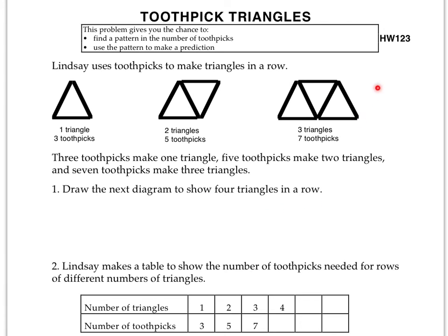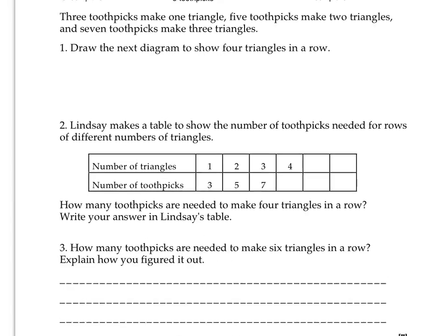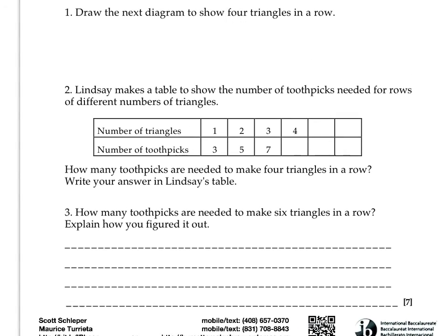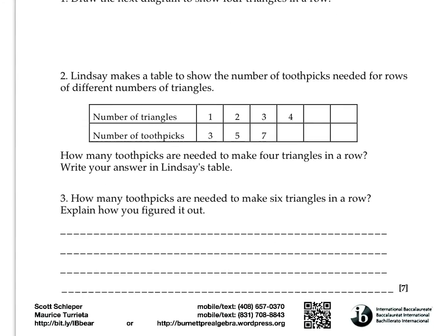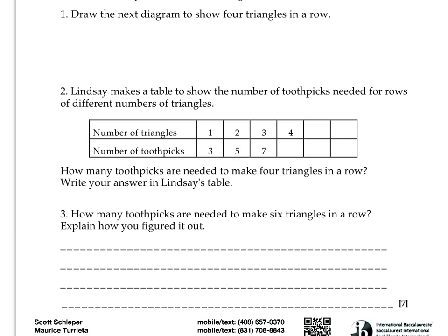So here we have three triangles in a row, so you're going to have to draw another diagram. Start a whole new diagram here and draw a fourth one. Draw it so that there's four triangles in a row. But draw that down here because there's not a whole lot of space over here, so draw that here. And then number two says Lindsay makes a table to show the number of toothpicks needed for rows of different numbers of triangles.